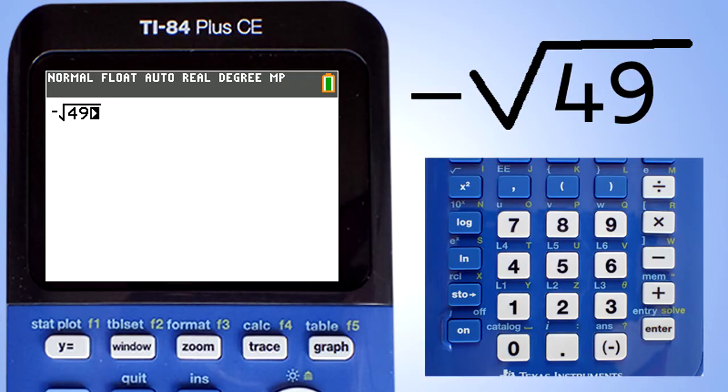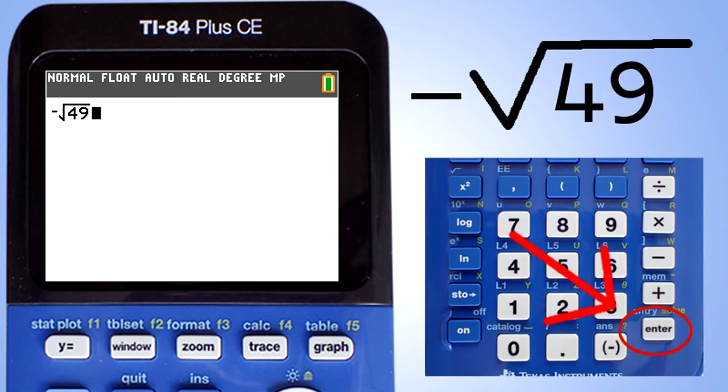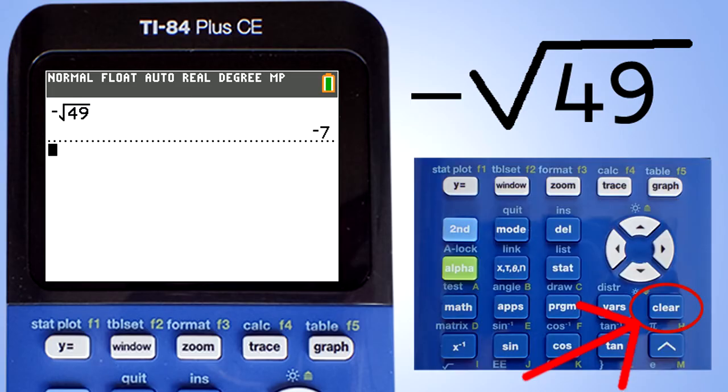This right arrow symbol also appears. Press the right arrow key to exit out of the radical symbol. Now we are ready to solve this square root. Press the enter button. And there is the answer, negative 7. Press the clear button.